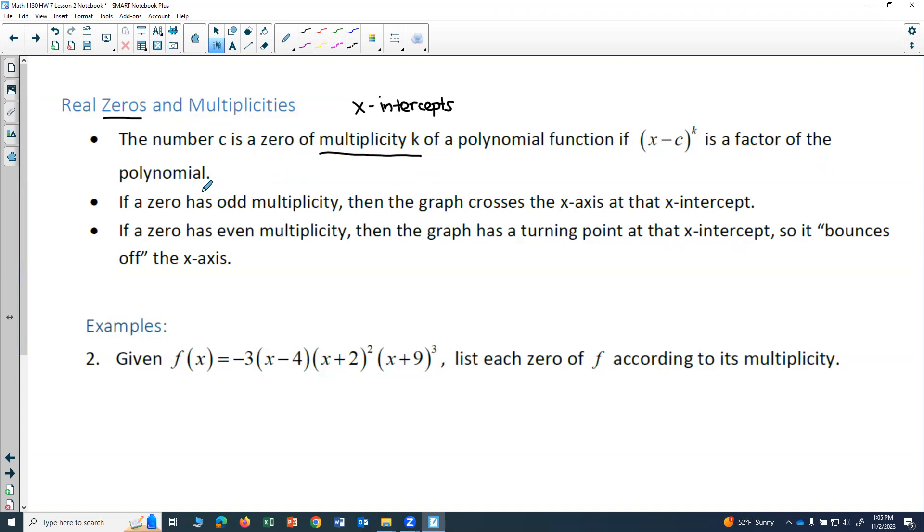If a zero has an odd multiplicity, then the graph crosses the x-axis at that x-intercept. So that's if you have an odd multiplicity.